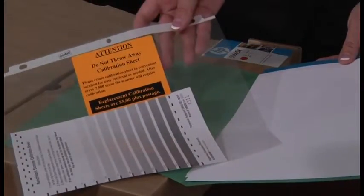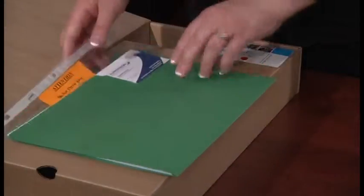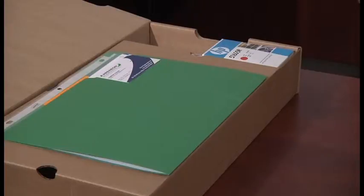Behind the price list is a clear protective sheet with a bright orange attention sticker at the top. Inside the protective sleeve is a calibration sheet for the scanner. You will need to keep this form in a safe place as it is reusable and necessary to keep the scanner running properly. We recommend that you keep all of these important materials together in the green folder they came in so they can be easily located.